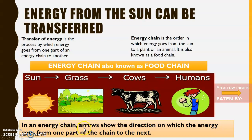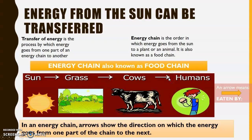In an energy chain, arrows show the direction in which the energy goes from one part to the next. The arrows you see here show us the direction in which energy goes from one part to another.